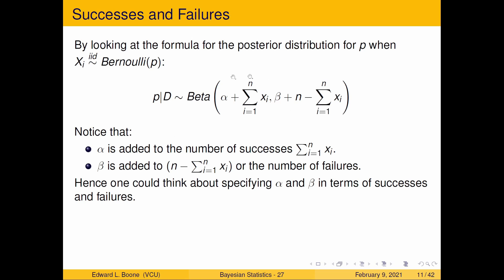If I stare at this formula, you know what? Right here, we're always adding in the number of successes. So alpha is getting added to the number of successes, and n minus the xi is the number of failures, and beta is getting added to that. So we can think about specifying alpha and beta in terms of successes and failures. So if we did that, that makes it easier to come up with an idea of how to do this, and let's look at an example.